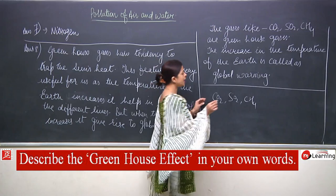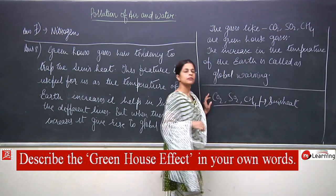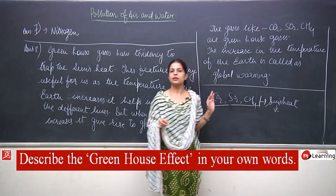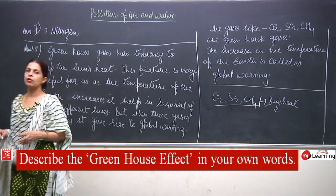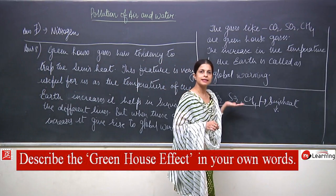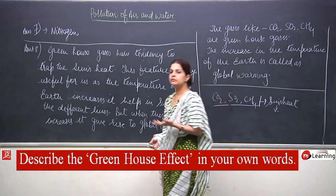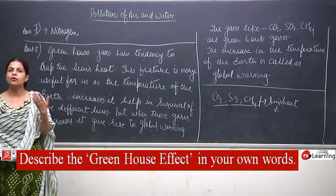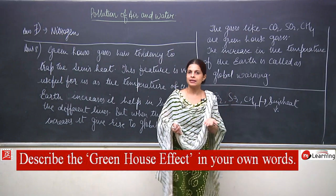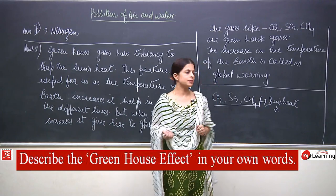These gases trap the sun's heat. This trapping is very important — if this heat were not there, the temperature of the earth would be very low and we would not survive. But when these gases increase, the amount of heat absorbed also increases, as the gases absorb more heat.